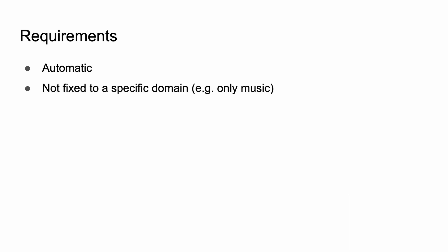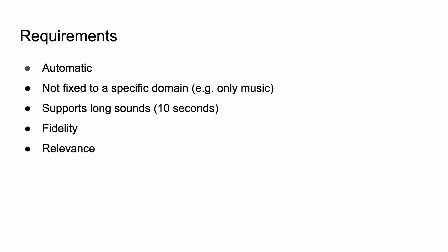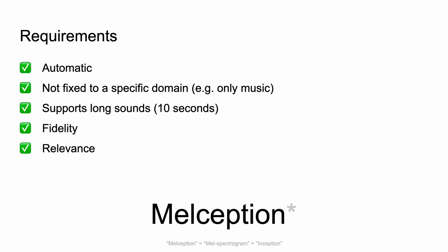Next, we present a novel family of metrics for conditional spectrogram generation. This metric should be automatic because human studies are tedious and expensive. Also, they should support open-domain long samples and evaluate both relevance and fidelity. Inspired by the success of inception-based metrics in image generation, we trained from scratch a variant of inception architecture on a large-scale open-domain dataset, and we refer to this model as MELCEPTION.